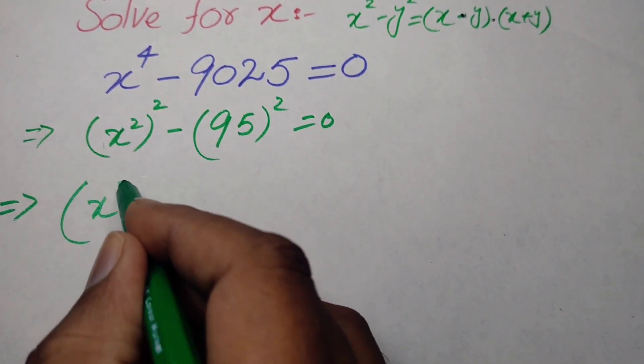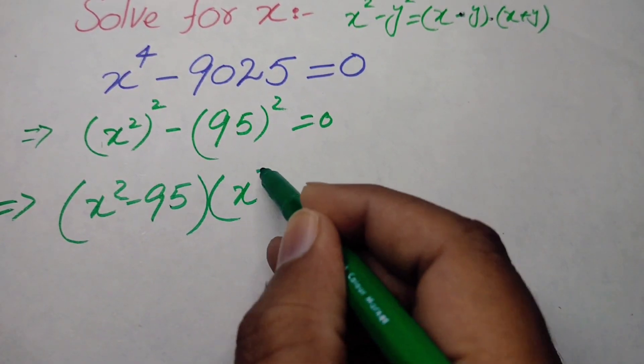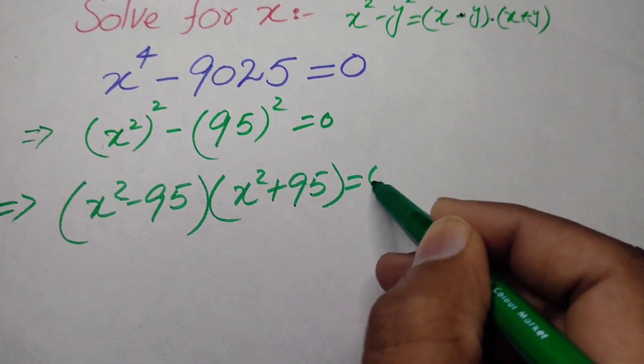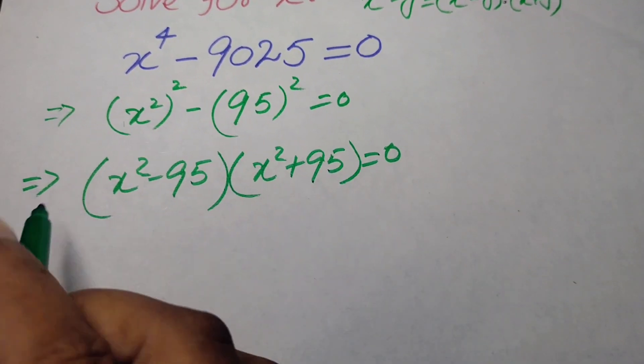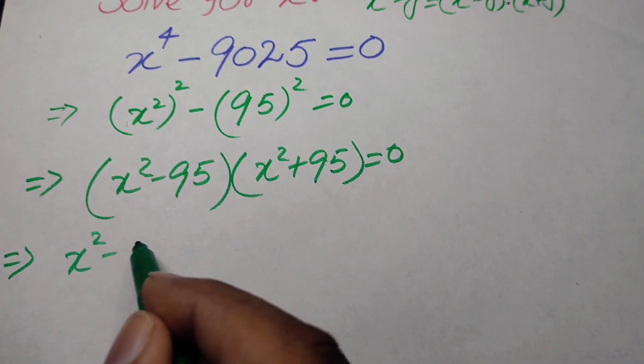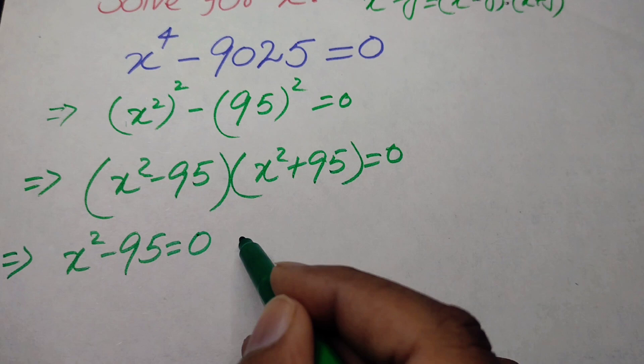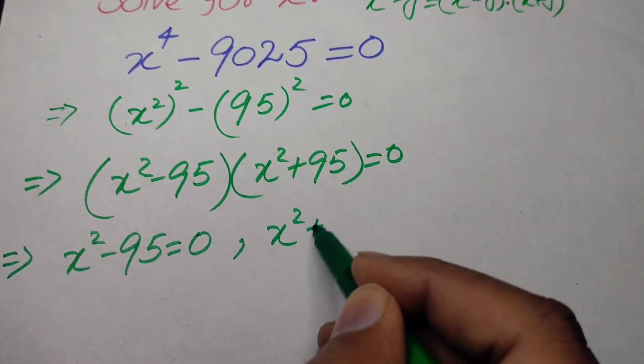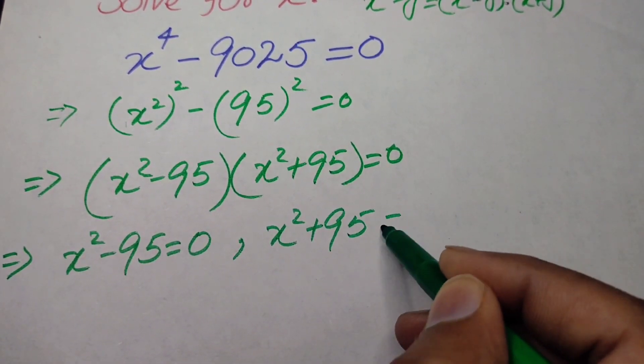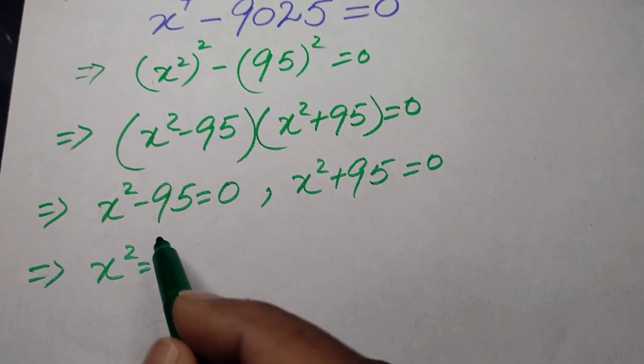After that we will make both of the terms separately equal to 0. We will write x squared minus 95 is equal to 0 and x squared plus 95 is equal to 0.